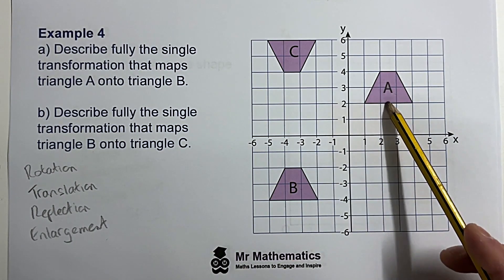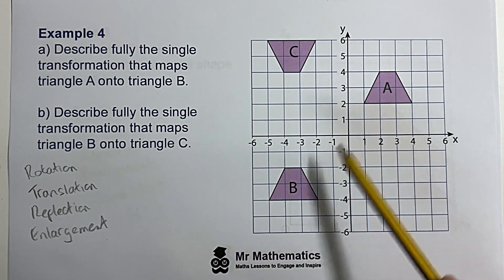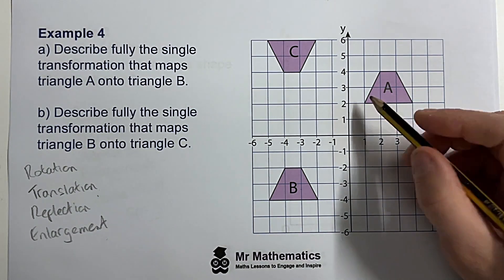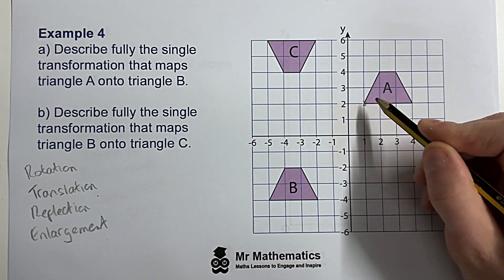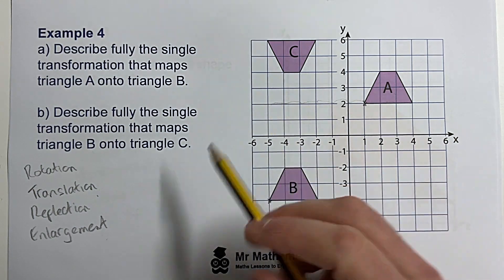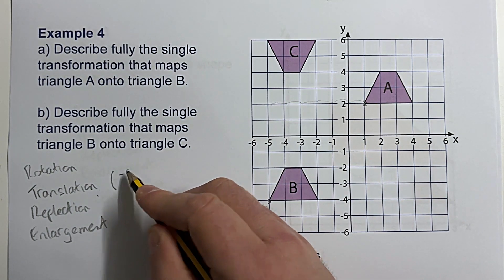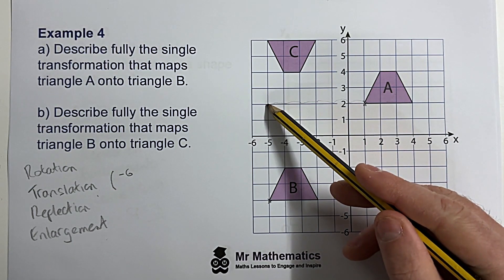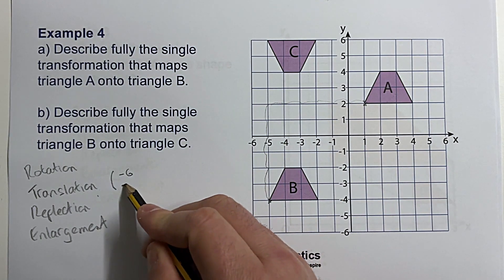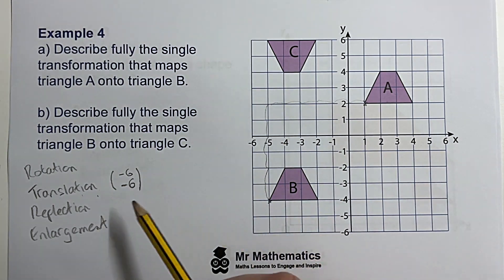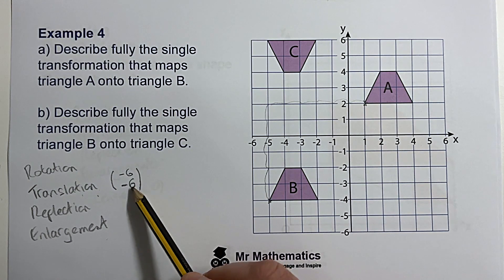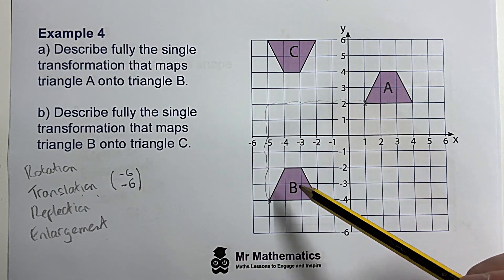The shapes have the same orientation, so it must be a translation. If it's a translation we need a translation vector. We pick a point on A and go to the same point on B: one, two, three, four, five, six — that's negative six because we're moving to the left — then one, two, three, four, five, six again downward, which is negative six. So to go from A to B it's a translation with vector negative six, negative six.